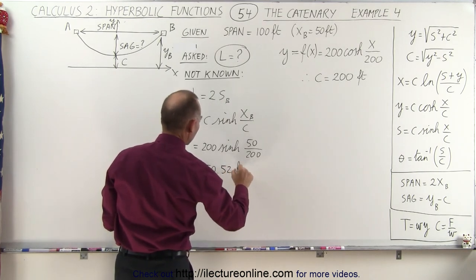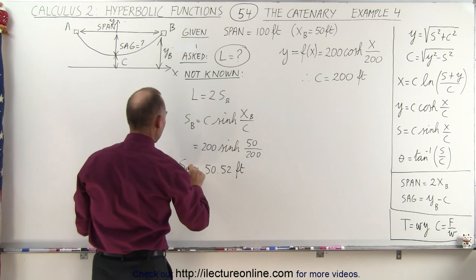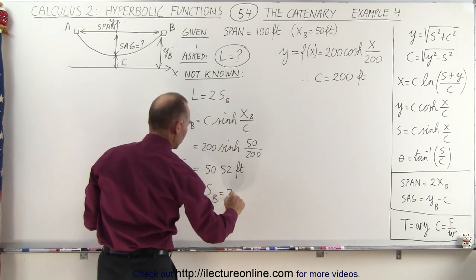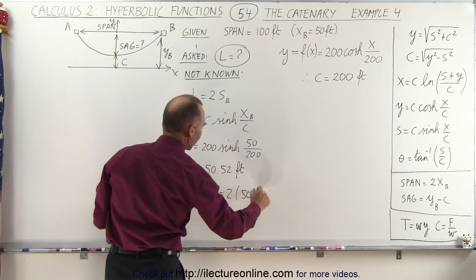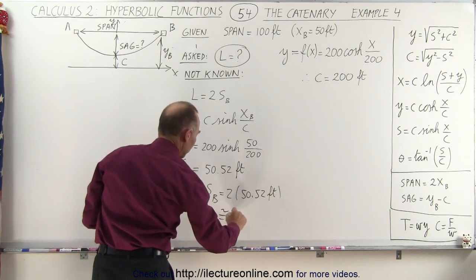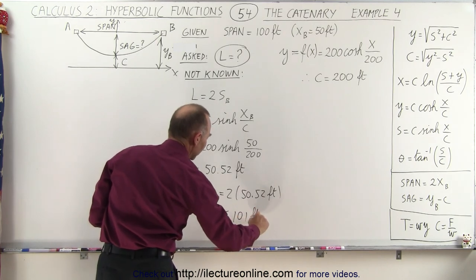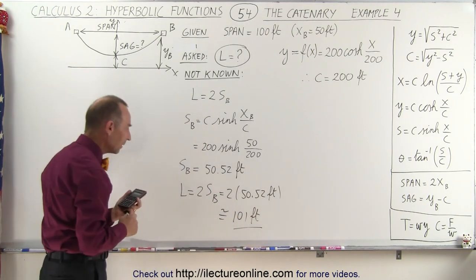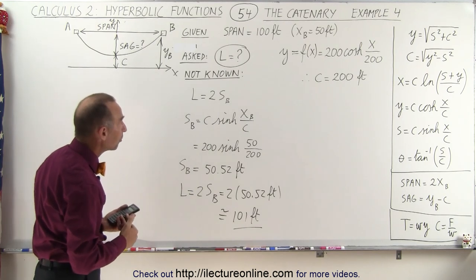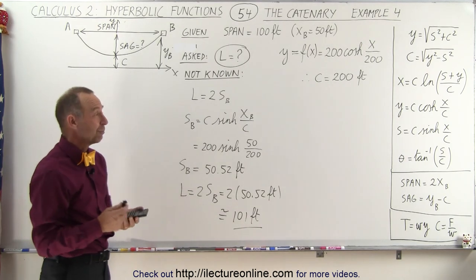50.52. And that would be in feet, that is s sub b. And the length, then, is twice s sub b, which is 2 times 50.52 feet. So when you double that, you get approximately 101 feet. So that means here that the length of the cable is just one foot more than the span, which would imply we don't have much of a sag.